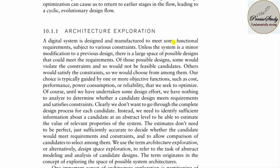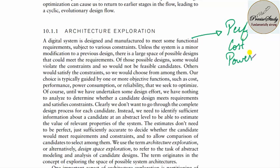Let us talk about architecture exploration. In order to do a design, the main constraints are performance, cost, and power. There is always a trade-off between power dissipation and performance. If performance is good, then power dissipation will be more, thereby decreasing battery backup. This is a disadvantage.